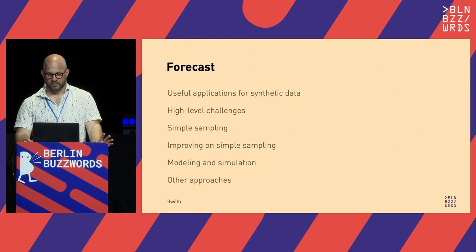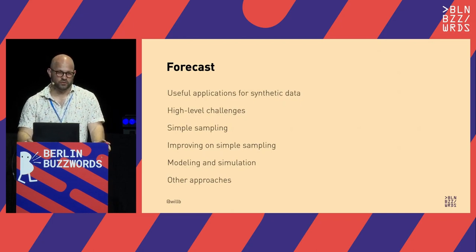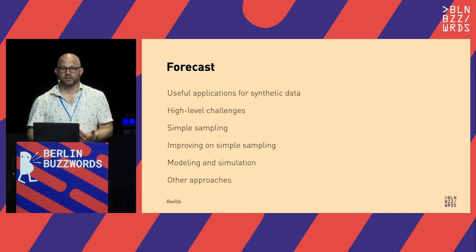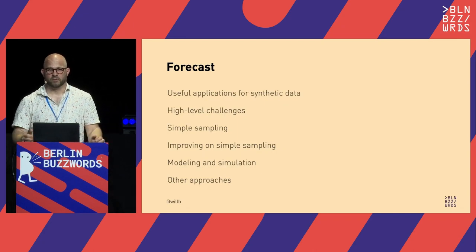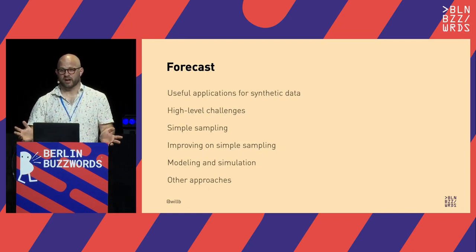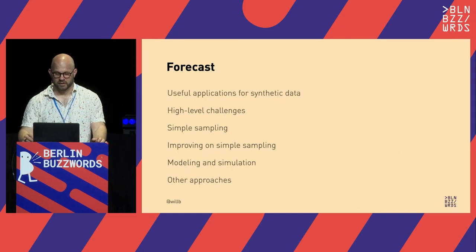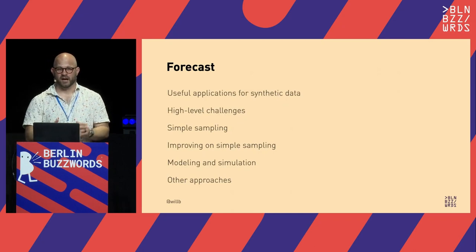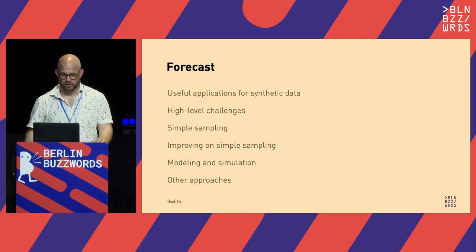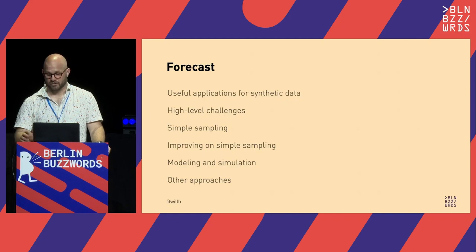We'll look at some ways to improve on those simple samples by taking into account joint distributions and correlations between features. We'll then look at how to use what we know about the real world to produce a better model of the process generating that data. Finally, we'll look at more automated or more involved approaches that you'll be better equipped to explore after considering the themes of this talk.